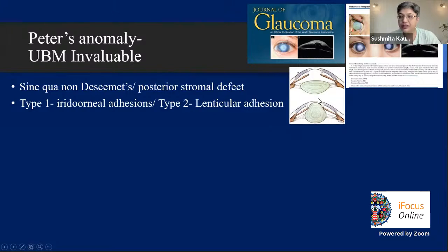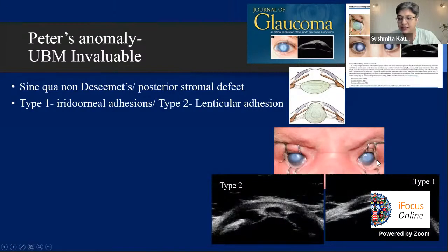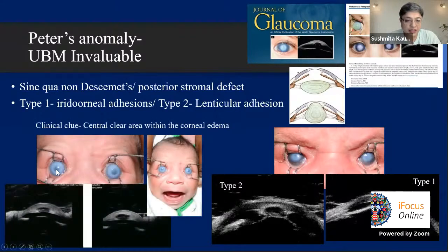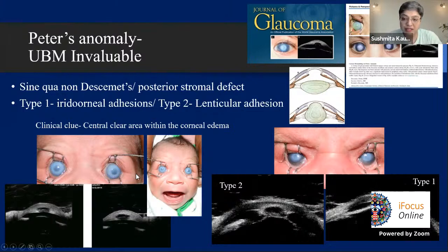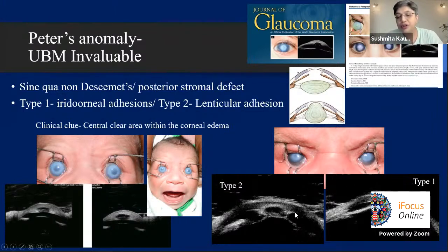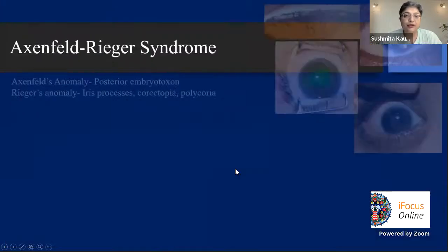For Peters anomaly, UBM has been invaluable to see the Descemet's defect — huge corneal clefts are recognized, surgery is performed, and a small defect remains when it clears, confirming the posterior stromal defect as sine qua non. Type 1 is an iridocorneal adhesion; Type 2 is a lenticular adhesion. UBM showing no irideal or corneal touch despite a frightening appearance means the baby may only need an optical iridectomy rather than severe anterior segment reconstruction.